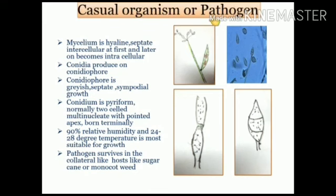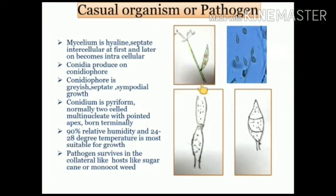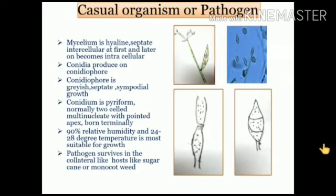Now we learn about the pathogen. Mycelium is hyaline, septate, intercellular at first and later becomes intracellular. Conidia are produced on conidiophores. Conidiophores are grayish, septate, with sympodial growth. Conidia are pyriform, normally two-celled, multinucleated with a pointed apex, borne terminally. Mycelium is septate and hyaline. Conidia may be two- or three-celled with a pointed end. 90% relative humidity and 24 to 28 degrees temperature is most suitable for growth. The pathogen survives on collateral hosts like sugarcane and monocot wheat.